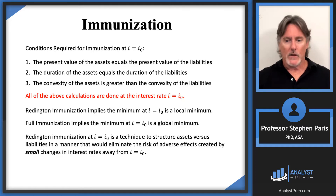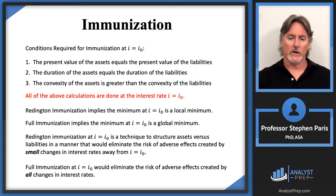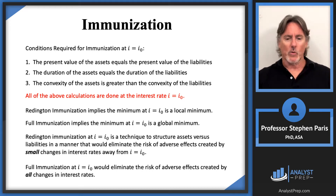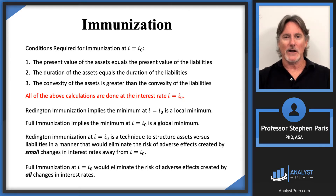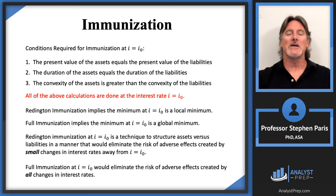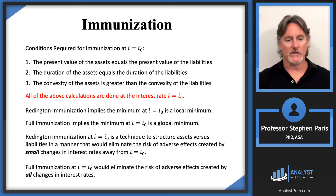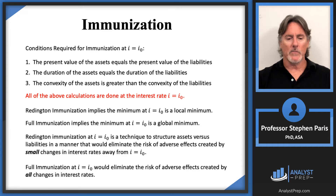Full immunization implies the minimum is a global minimum. Full immunization at I equal I-naught eliminates the risk of adverse effects created by all changes in interest rates. Eliminating adverse effects means you don't want the net present value function to go from positive to negative — that's a bad effect. You want the NPV to remain positive regardless of interest rate changes. So Reddington immunization protects against small changes in interest rates because it's a local minimum; full immunization protects from all changes in interest rates because it's a global minimum.